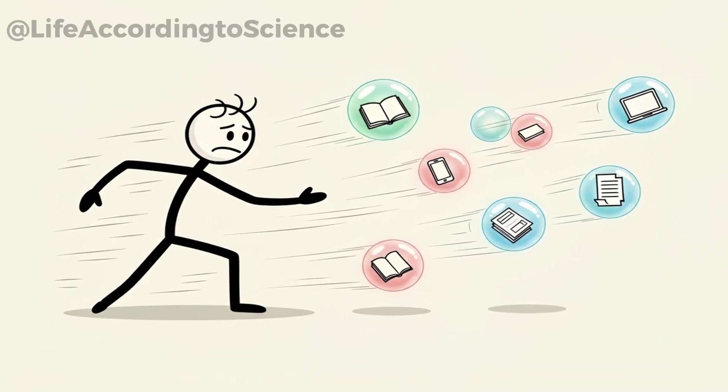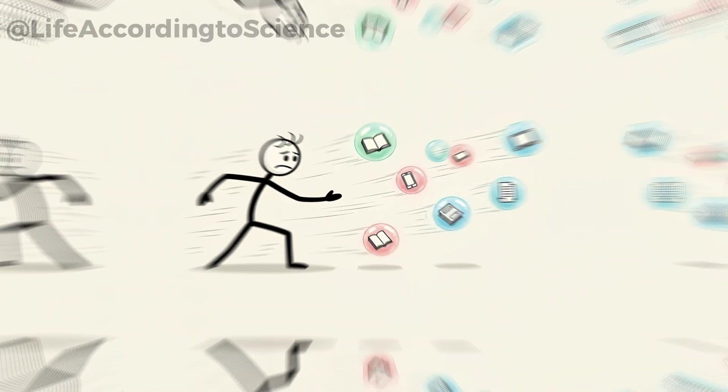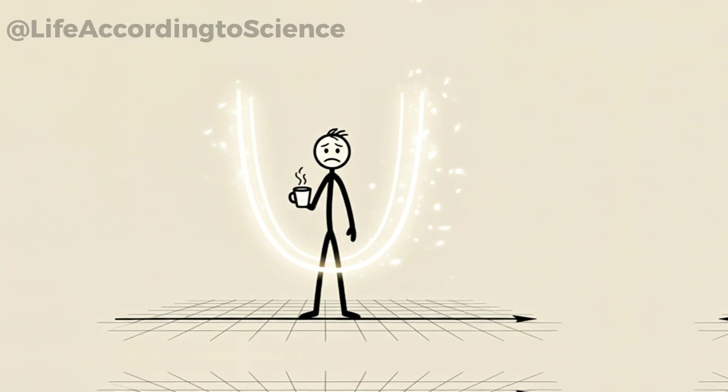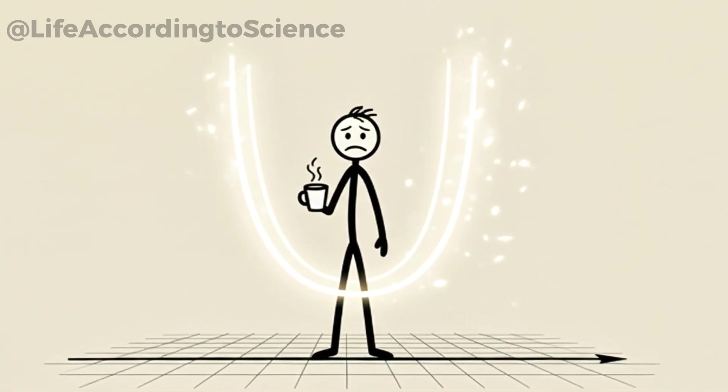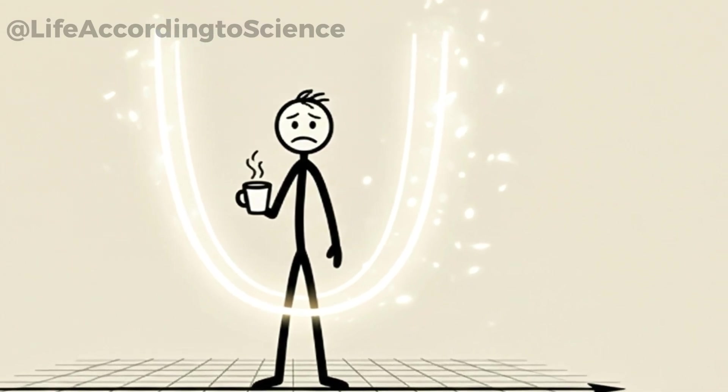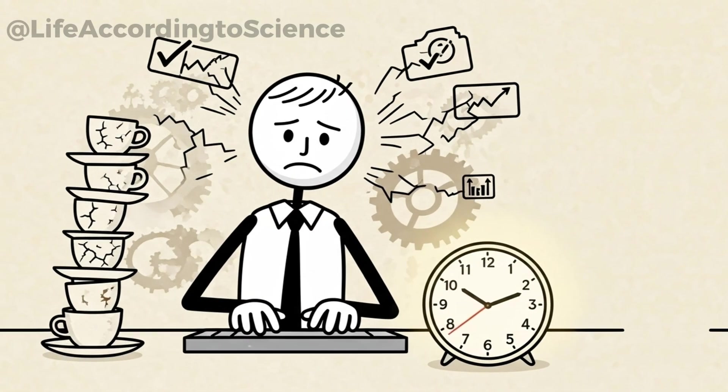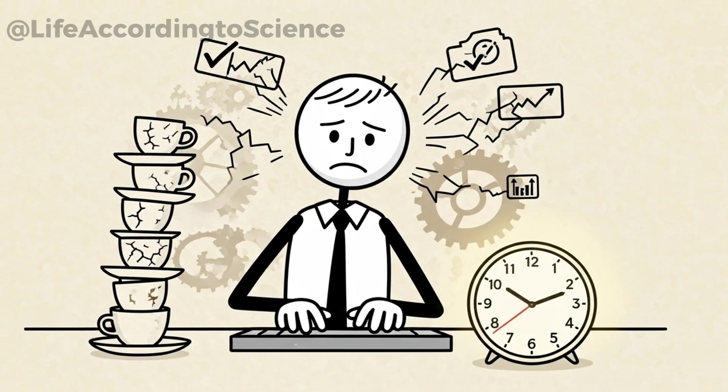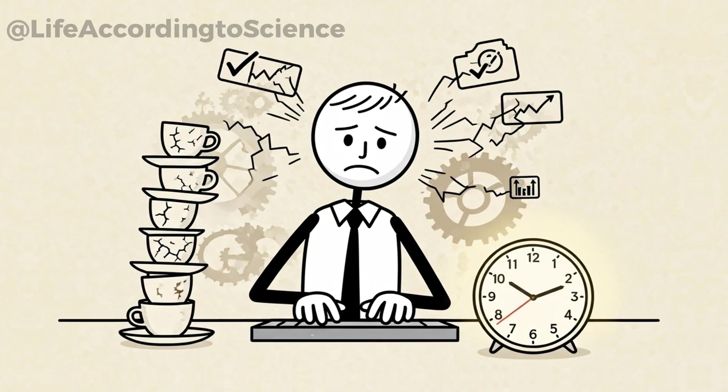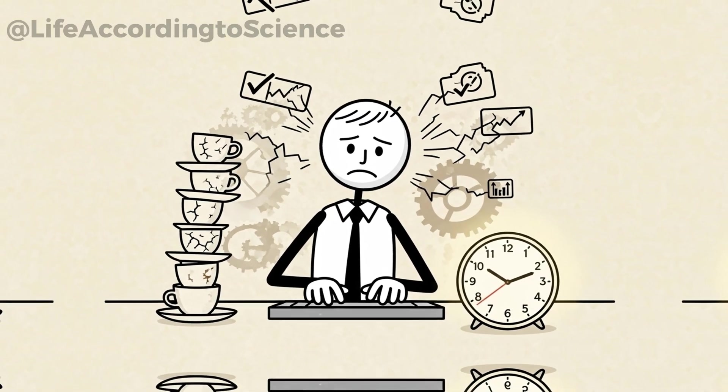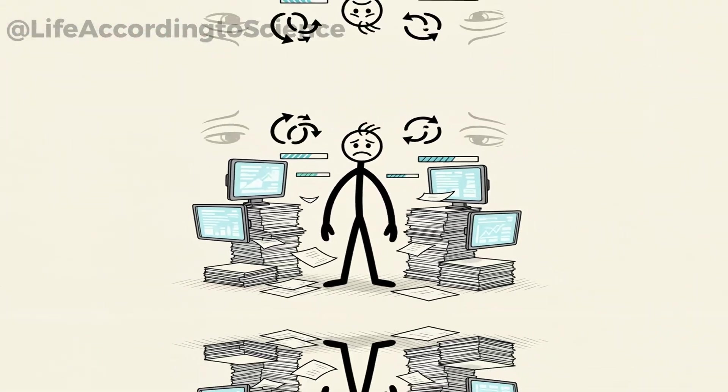Researchers call this the inverted U effect. Up to a certain point, caffeine sharpens your mind. Beyond that point, it tips into distraction, restlessness, and reduced productivity. Five cups a day often pushes people over that edge. So, while you might feel like a productivity machine, you could actually be less efficient, working more hours, but achieving less.